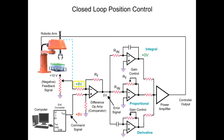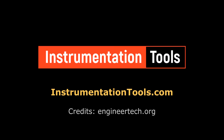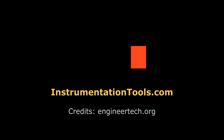The feedback signal is now equal to the command signal. The output voltages of the amplifiers are zero and the robotic arm motor stops turning.